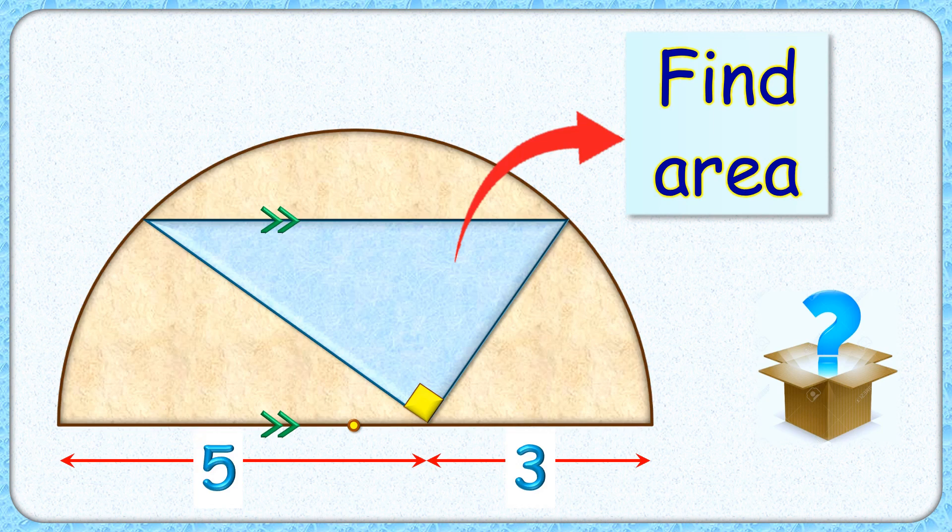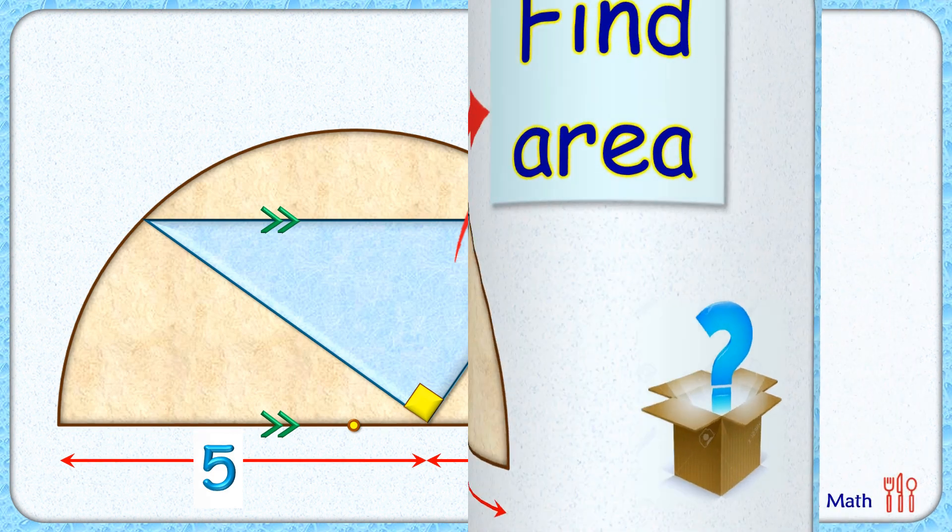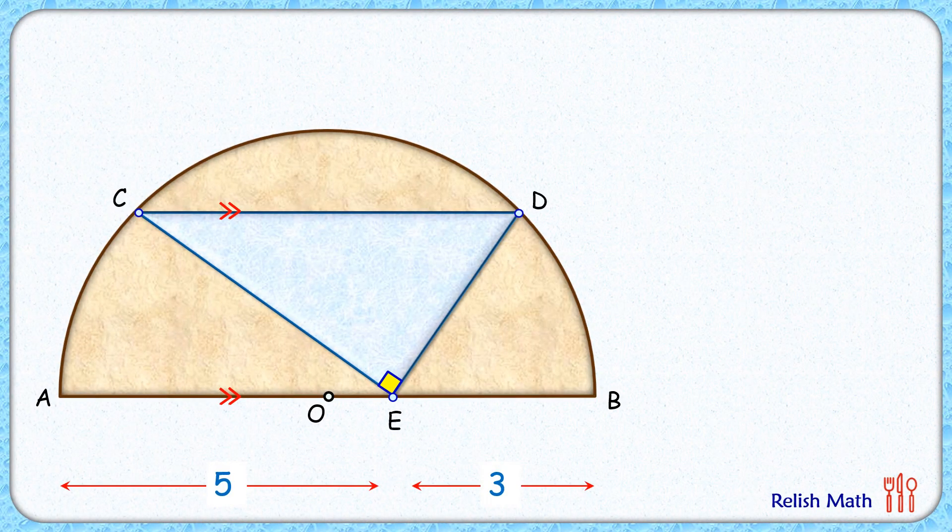In this interesting question, given is a semicircle with a right angle triangle in it. Given is the hypotenuse of the triangle is parallel to the diameter of the semicircle. With this limited information we have to find the area of the right angle triangle. Let's check the solution.